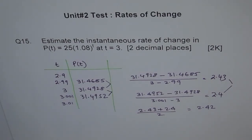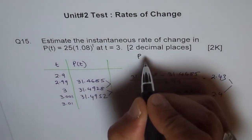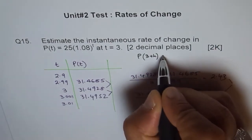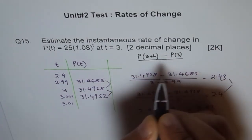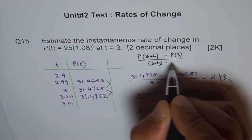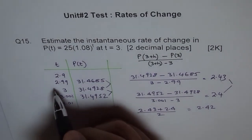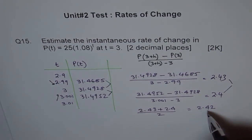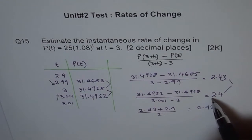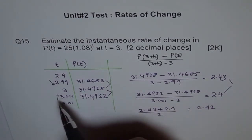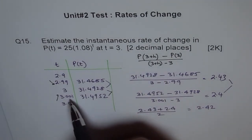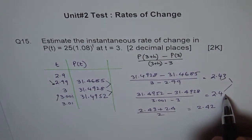To summarize: the instantaneous rate of change is given by [P(3 + h) − P(3)] ÷ [(3 + h) − 3]. We could have used the centered method, or just one side, and still gotten a very accurate result. As you can see, following from 3.001 gave us 2.4, meaning h equals 0.001.